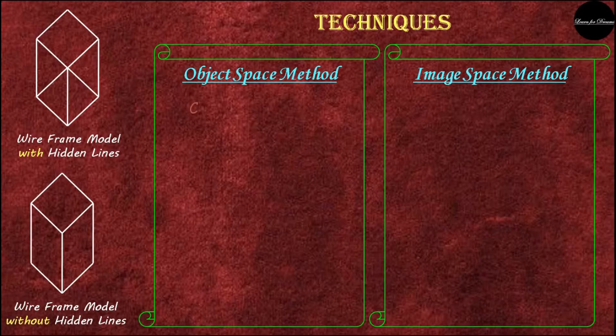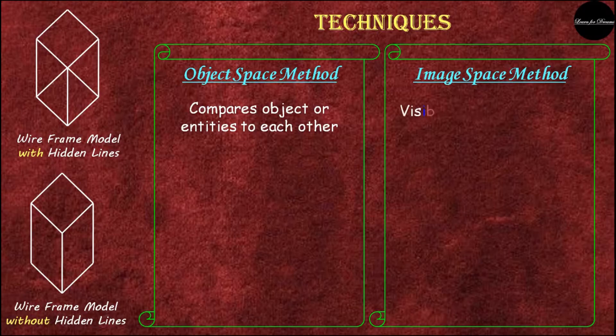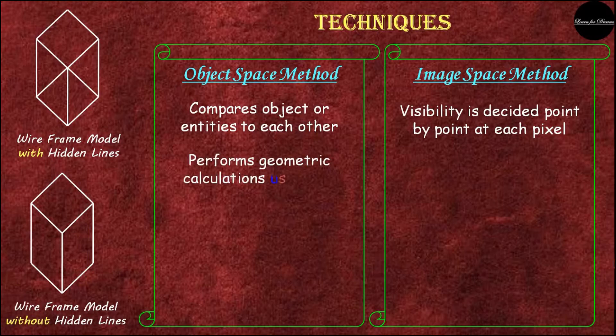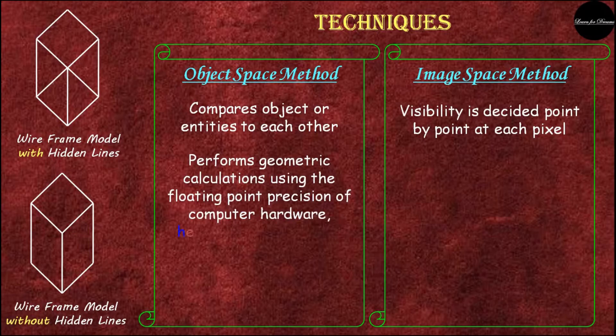Let's see the techniques used for hidden line removal. The first one is the object space method and the second one is the image space method. In the object space method, objects or entities are compared to each other to decide visibility. In the image space method, visibility is decided point by point at each pixel.